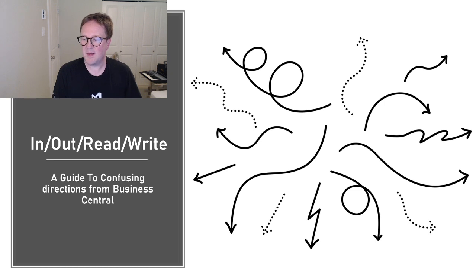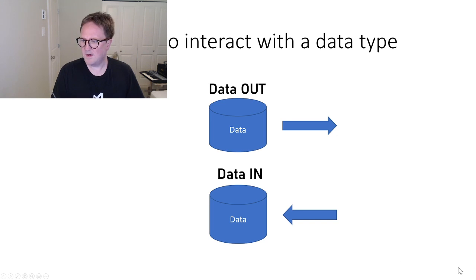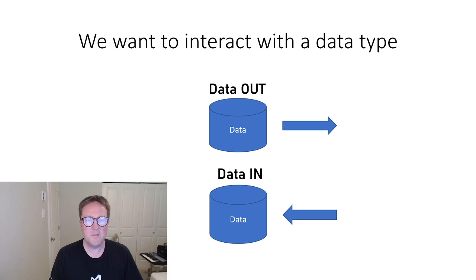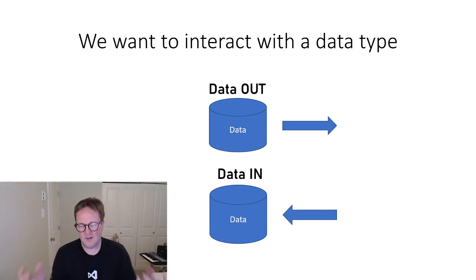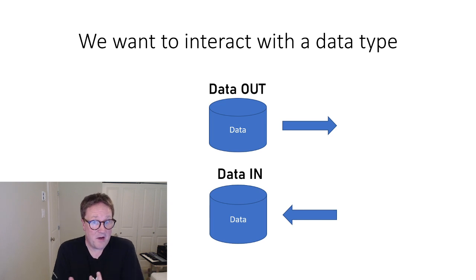So let me put myself back in this corner. "In/Read, Out/Write — A Guide to Confusing Directions from Business Central" — let's get going. It's all about having some sort of entity and needing to either get data into it or get data out of it.